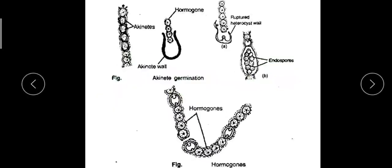Another one is endospores. Here you can see endospores. Endospores are formed endogenously, hence it is called endospore. Endospore formation has been reported from a few species of Nostoc.